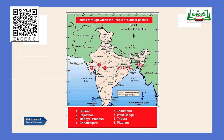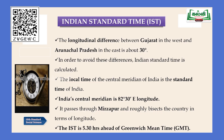The Tropic of Cancer divides India into non-peninsular India (north India) and Peninsular India (south India). The boundaries of India are: Himalayas in the north, Indian Ocean in the south, Bay of Bengal in the east, and Arabian Sea in the west.